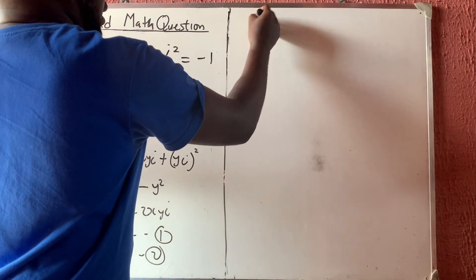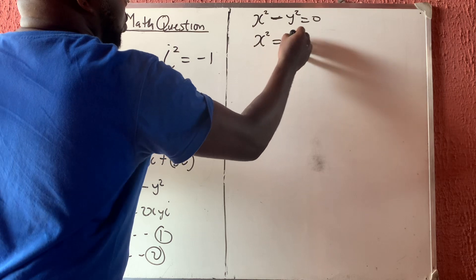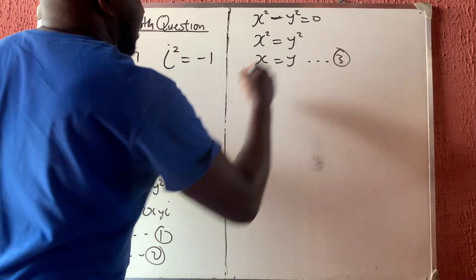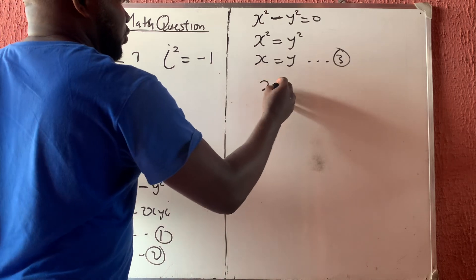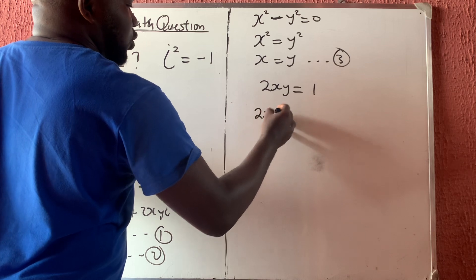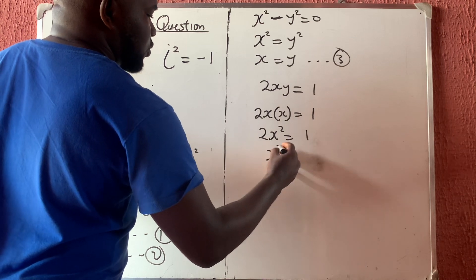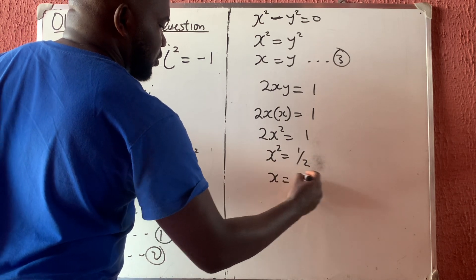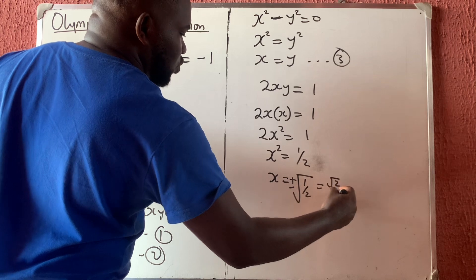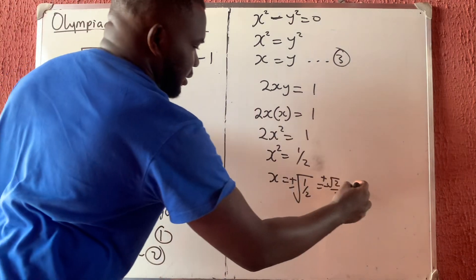From equation 1, x squared equals y squared, so x equals y. From equation 2, 2xy equals 1, and since x equals y, we get 2x squared equals 1, so x squared equals 1 over 2, meaning x equals plus or minus the square root of 1/2, which rationalizes to plus or minus root 2 over 2.